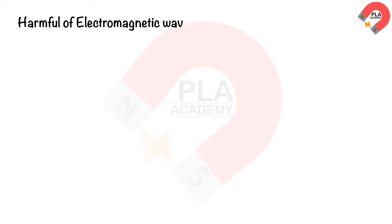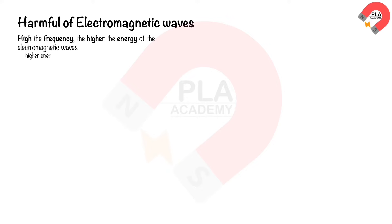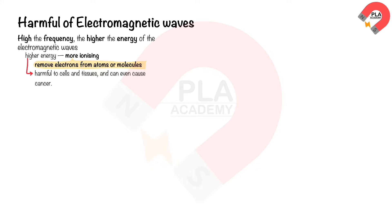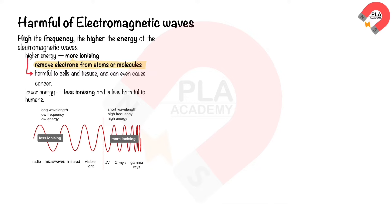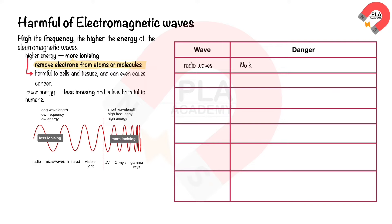Harmful effects of electromagnetic waves on people. The higher the frequency, the higher the energy. Electromagnetic waves with higher energy are more ionizing, meaning they can remove electrons from atoms or molecules, which can damage cells and tissues and cause cancer. Higher-energy waves with lower energy are less ionizing and less harmful, but can still be harmful if absorbed in large amounts. Radio waves: no known danger. Microwaves: possible heat damage to internal organs when water molecules in the body absorb microwaves strongly.